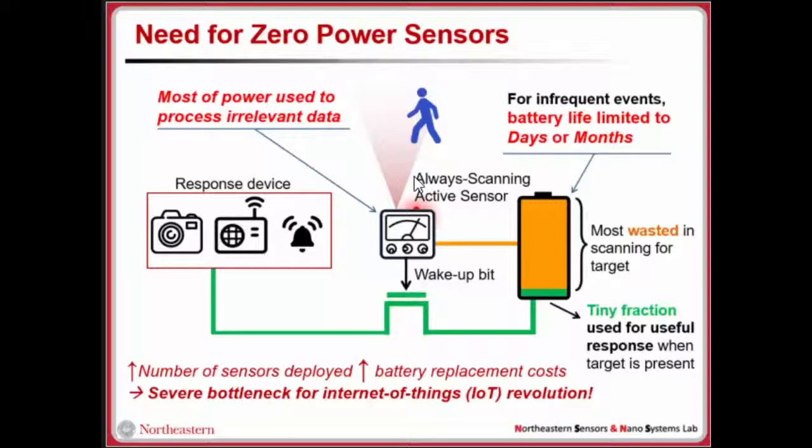This acts as a severe bottleneck for large-scale sensor networks because as you increase the number of sensors, the replacement cost for the battery and maintenance cost also scales. In some cases, you can't even replace the battery. This limits the proliferation of sensors in a certain network and is extremely limiting for large-scale IoT applications.